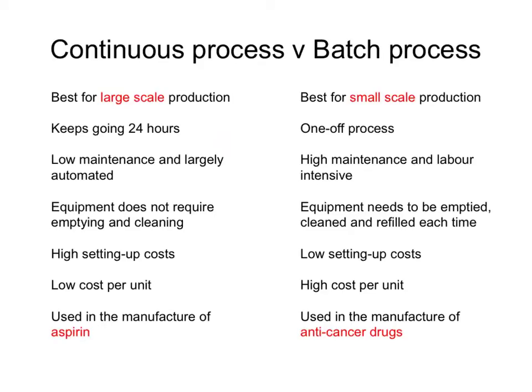This table shows a comparison between the two methods. Continuous process runs 24/7 whereas batch process is one-off. Continuous process is much better for large scale production whereas batch process is better for small scale production, making a particular drug according to when it's ordered. Continuous process is low maintenance and largely automated whereas batch process is high maintenance and labour intensive, and that labour is very expensive.